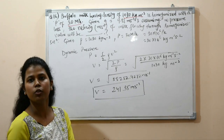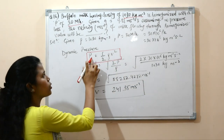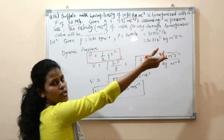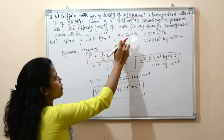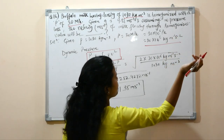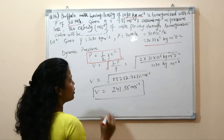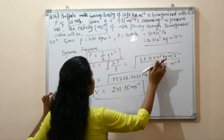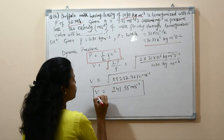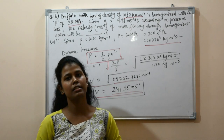Substituting the values — pressure = 30 MPa = 30 × 10⁶ Pa and ρ = 1030 kg/m³ — into v = √(2P/ρ), the velocity comes out to be approximately 241.35 m/s. This is the velocity at which the milk flows through the homogenizer.